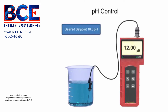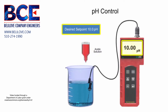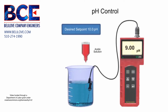When a high alkaline level is detected in the solution, an acid is added to decrease the pH level. When a low alkaline level is detected in the solution, a base is added to increase the pH level.